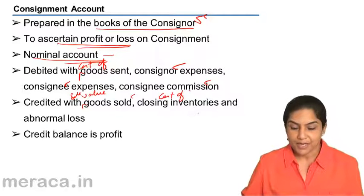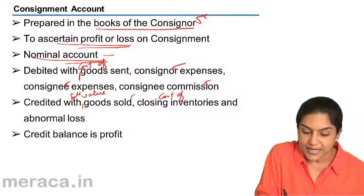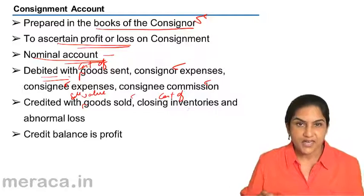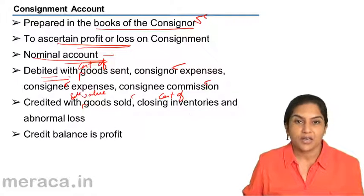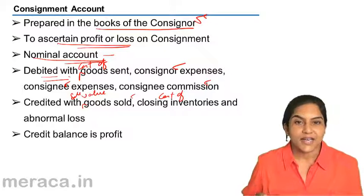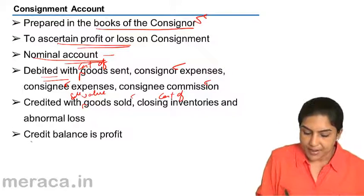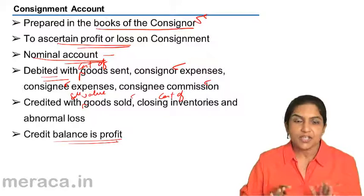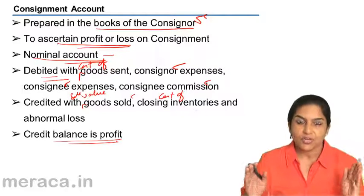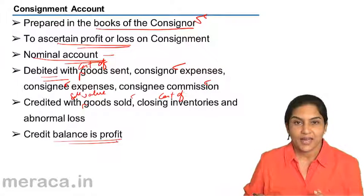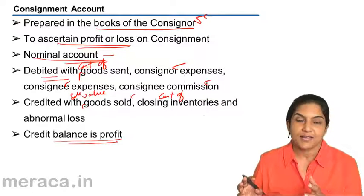Looking at the balance in the consignment account: we debited it with the cost of goods, consigner expenses, consignee expenses, and the commission payable to the consignee. It is credited with the sales. Therefore, when the credit side is more, we get a profit — a credit balance in this account represents profit. So the consignment account is a nominal account debited with all expenses on consignment and credited with income from sales and closing stock.